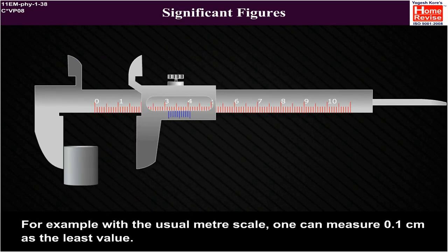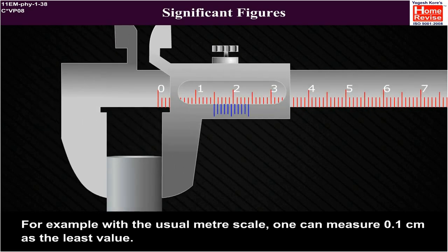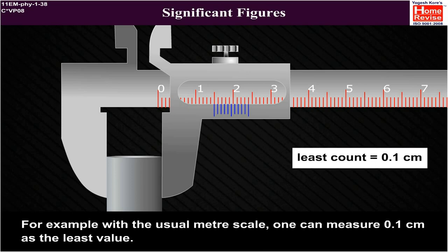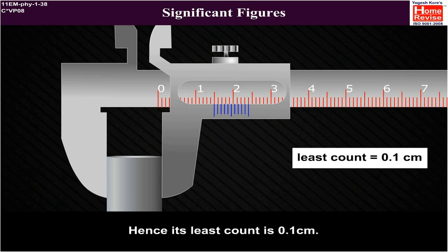For example, with the usual meter scale, one can measure 0.1 cm as the least value. Hence, its least count is 0.1 cm.